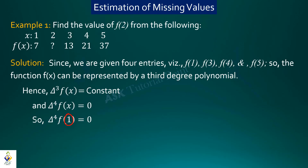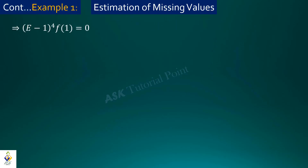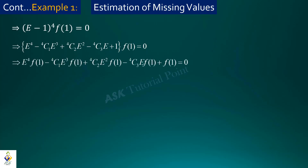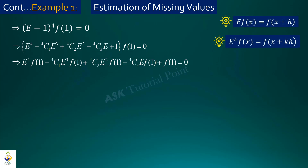So we write delta⁴ f(1) = 0, expanding (E−1)⁴ f(1) using the binomial theorem. We expand E raised to power 4 f(1) minus 4C1 times E cubed f(1), and so on for the other terms. We know that E^k f(x) = f(x + kh), where x = 1 and h = 1.